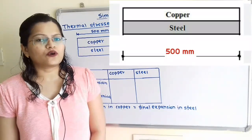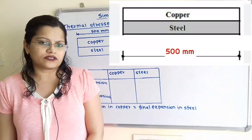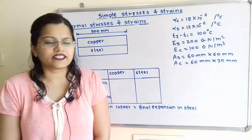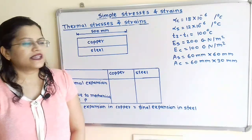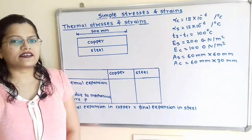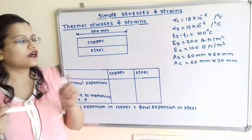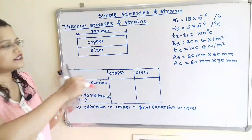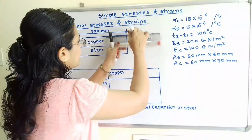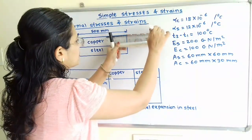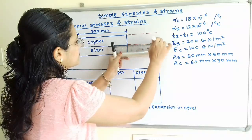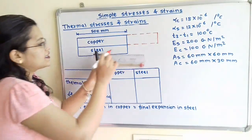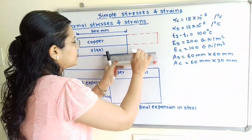We have to first show the free extension of these rods. If we observe the value of alpha — the coefficient of linear expansion for copper and steel — then for copper this value is greater than for steel. So we have to show more extension in copper than in steel. We will first show the free extension in the rods: more extension for copper, and less extension for the steel bar.